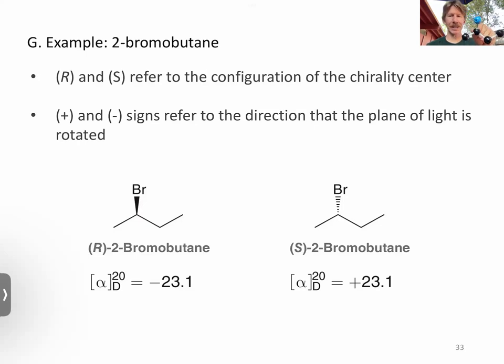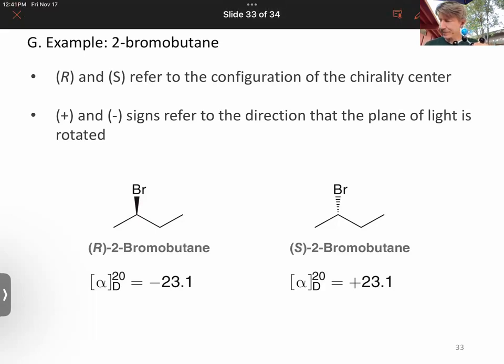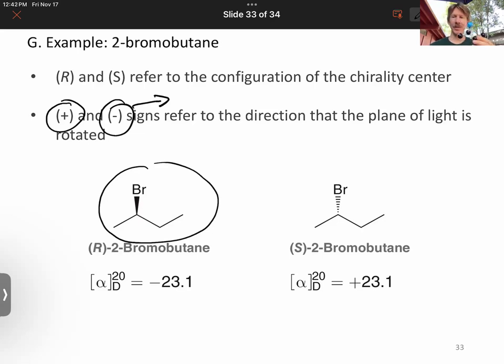And as you can see, if I hold it like this and the bromine is coming towards me, that is what I'm getting for this one right here. And all we want to show you is that now we can actually do the experiment or somebody else did the experiment to show that this has a minus. And minus means that the plane of light is, the plane of polarized light is rotated to the left or counterclockwise.